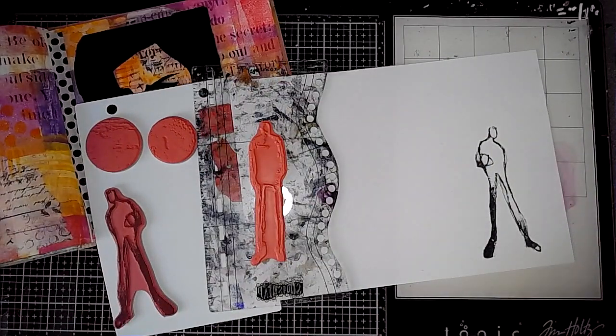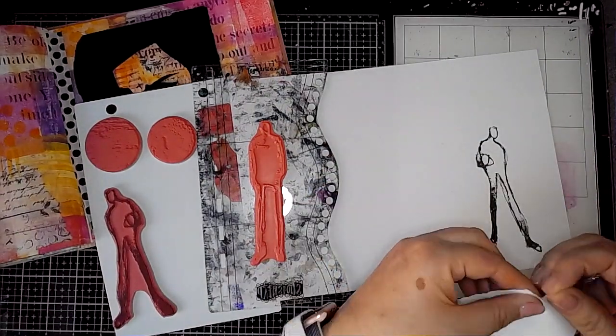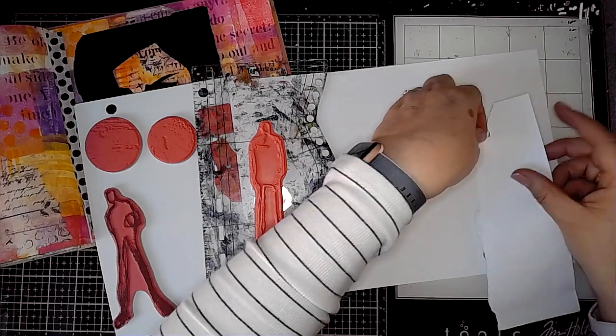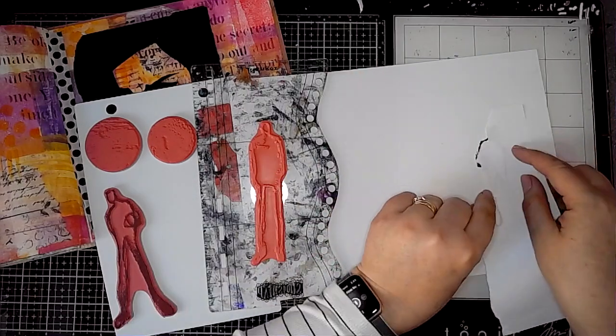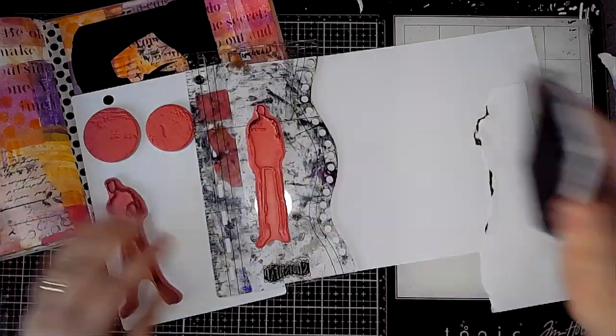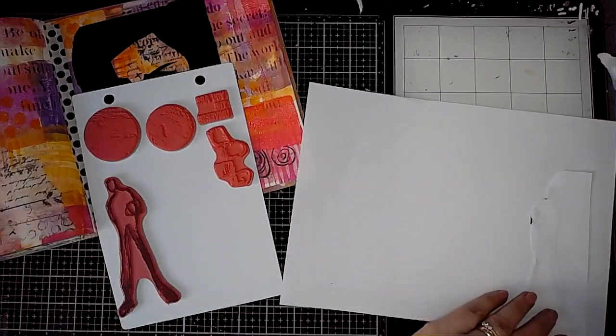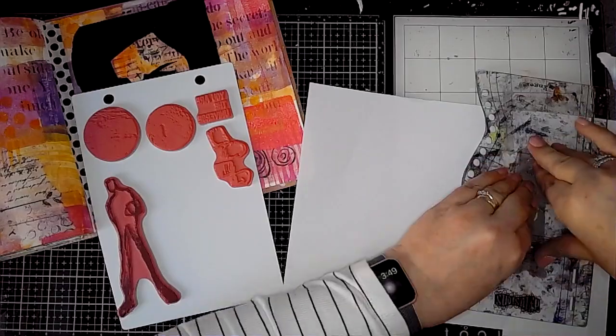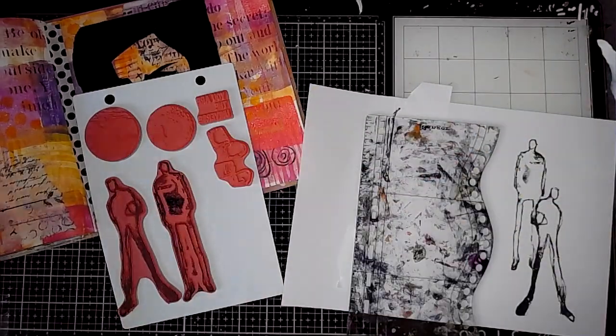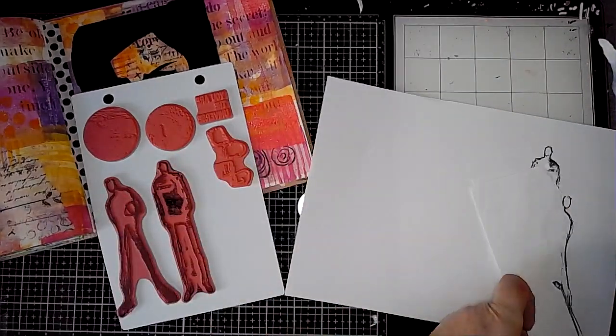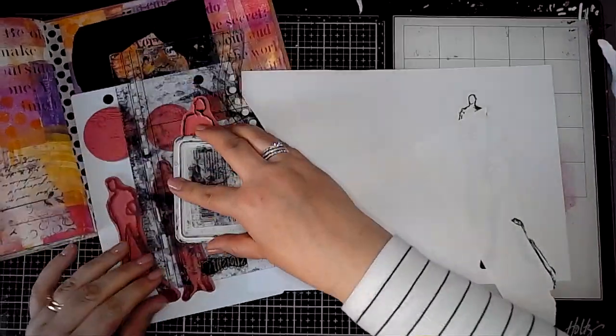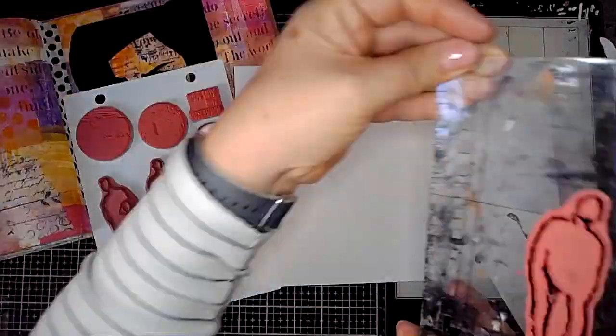So this stamp set is called You Are the Universe. It's one of Dina's new sets and I'm just going to try and create like a little group of the stamps here. So I'm just masking off the area there with a piece of paper so that I can put the stamps behind each other without stamping over the stamp that was there in the first place, if that makes sense.